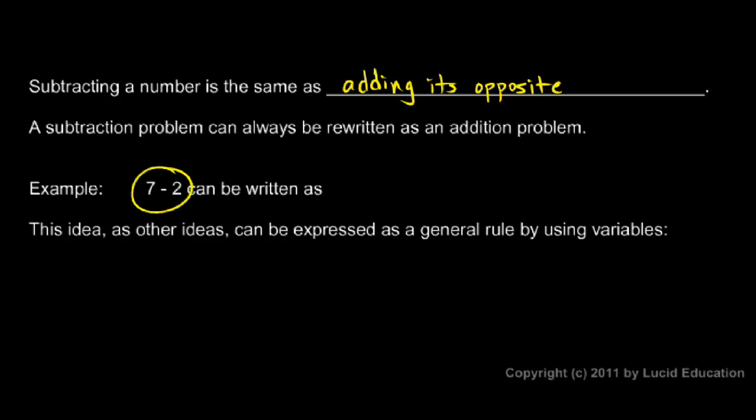If you look at this example, 7 minus 2, that could be rewritten as 7 plus negative 2. In other words, 7 plus the opposite of 2. Instead of subtracting 2, we're adding negative 2.